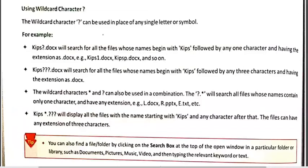One more example: if we search kips asterisk dot question mark question mark question mark (kips*.???), it will display those files which have 'kips' as the starting name, after which there can be any characters because of the asterisk, but the extension must be exactly three letters because each question mark represents only one character. For example, searching kips*.??? will return a result like kipsbook.txt, where asterisk replaced 'book' and 'txt' with three characters replaces the three question marks.